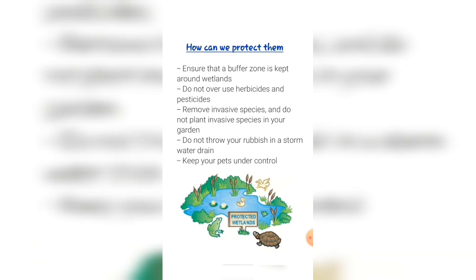How can we protect them? Ensure that a buffer zone is kept around wetlands. Do not build in this buffer zone. Do not use herbicides and pesticides unnecessarily. Remove invasive species.